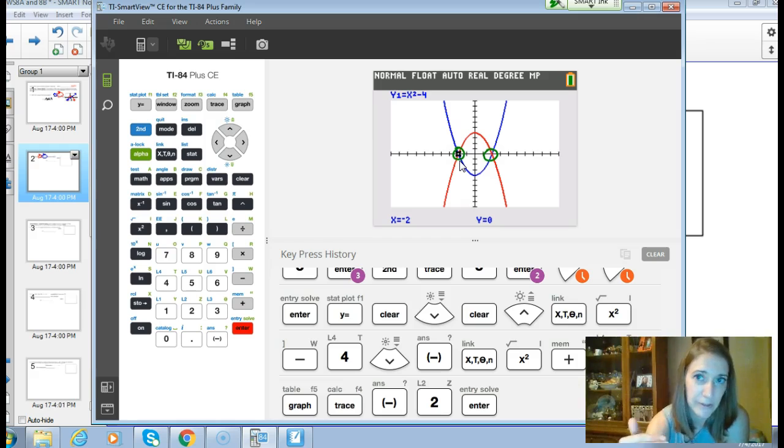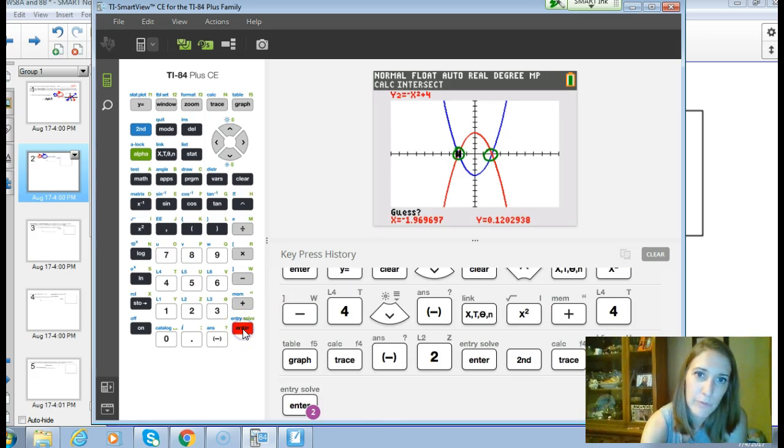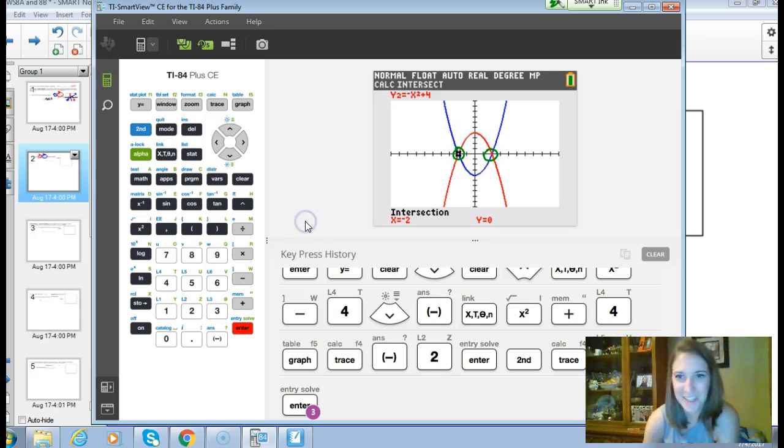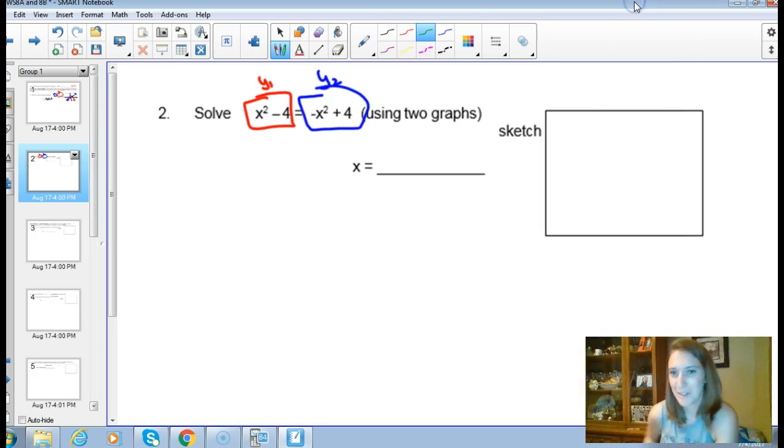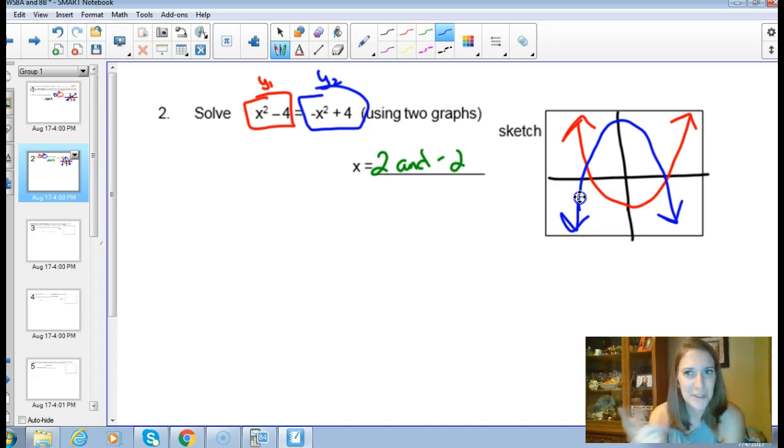Negative 2 squared minus 4 is 0, and then negative 2 squared is 4, but then the negative in front of it plus 4 is also 0. You could still do the intersect method. My two solutions were x equals 2 and negative 2. I would expect to see a sketch showing the first parabola and the upside down parabola with the two intersection points marked.